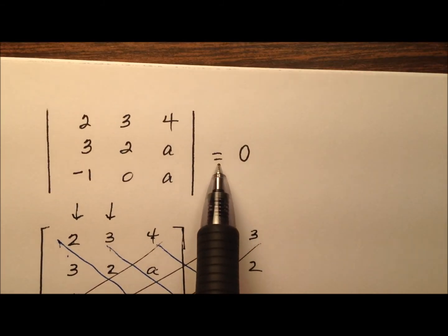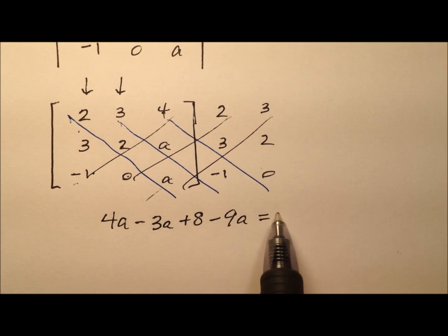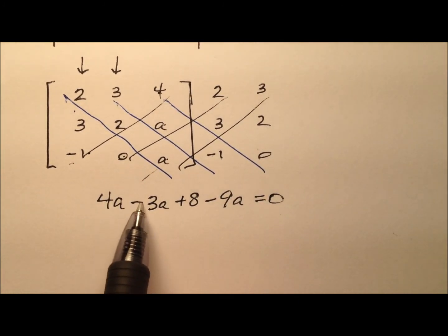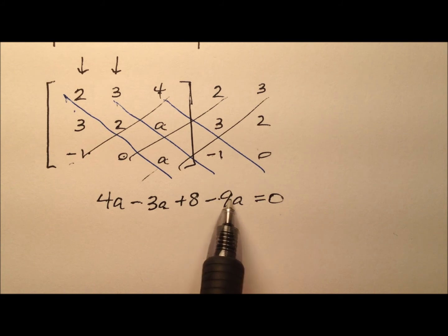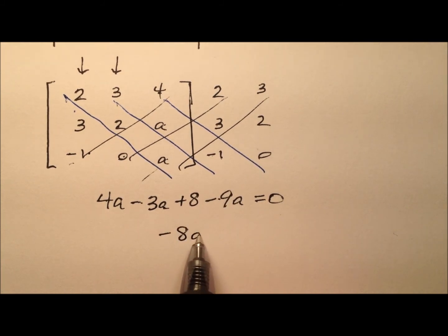And from the original equation, that equals 0. So 4A minus 3A is 1A, minus 9A is negative 8A.